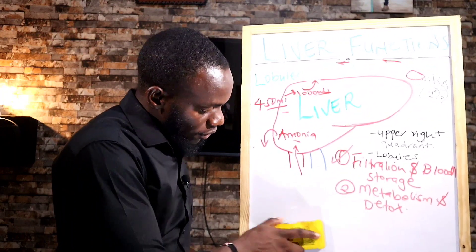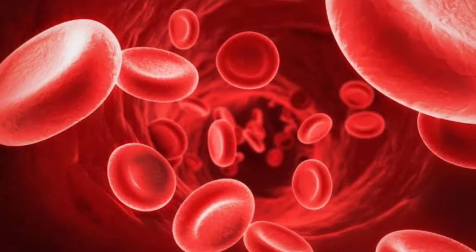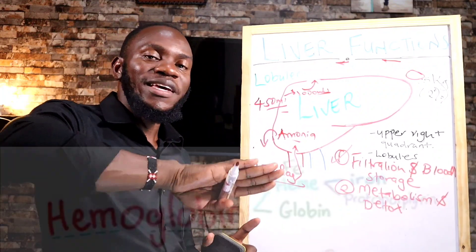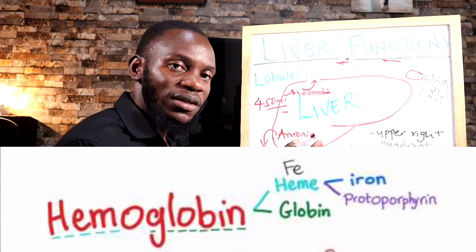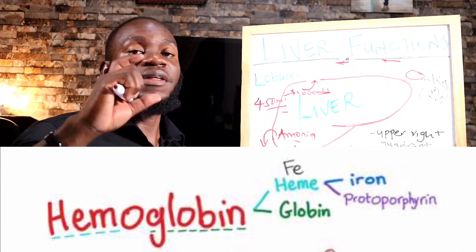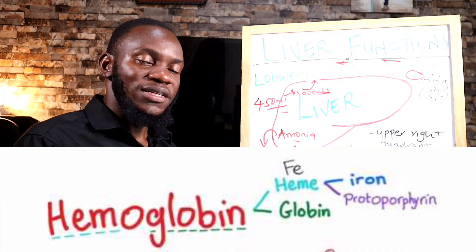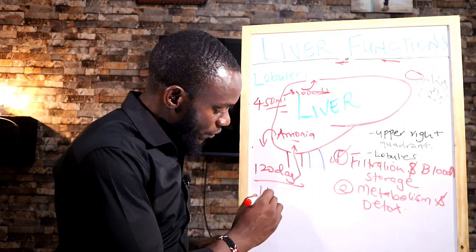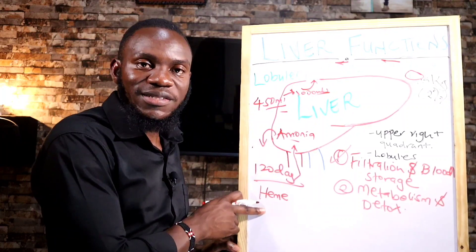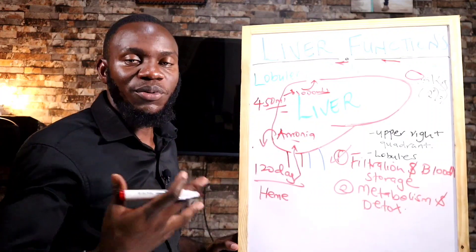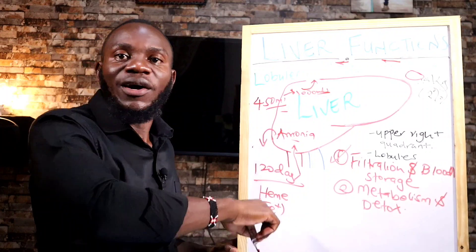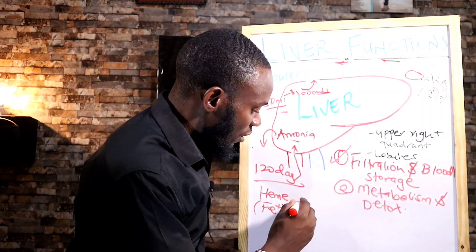The next one is red blood cell breakdown. The liver breaks down red blood cells, which have a lifetime of 120 days. These red blood cells are broken down to give two components: one is the heme — the iron part — and the other is the globin — the protein part. Red blood cells contain hemoglobin, so the heme is the iron part and the globin is the protein part. Globin can be recycled as a protein to form other structural proteins. The heme is converted to something called biliverdin, which is then converted to bilirubin.